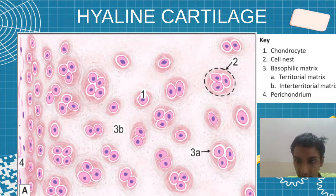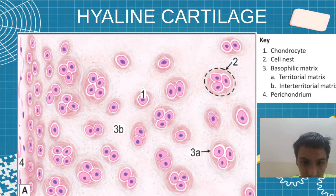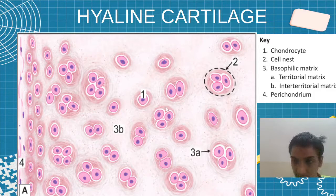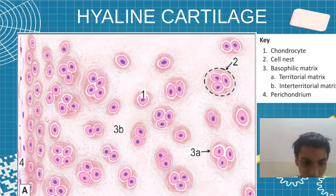First, hyaline cartilage. Here we are observing a number of chondrocytes, which you can see in pink color. You can also find the nuclei, the chondrocytic nuclei.